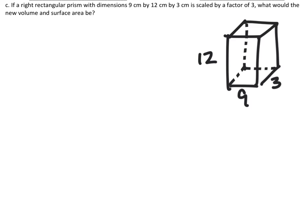All right, so we have this right rectangular prism with dimensions 9 cm by 12 cm by 3 cm for length, width, and height. It is scaled by a factor of 3. What would the new volume and surface area be?